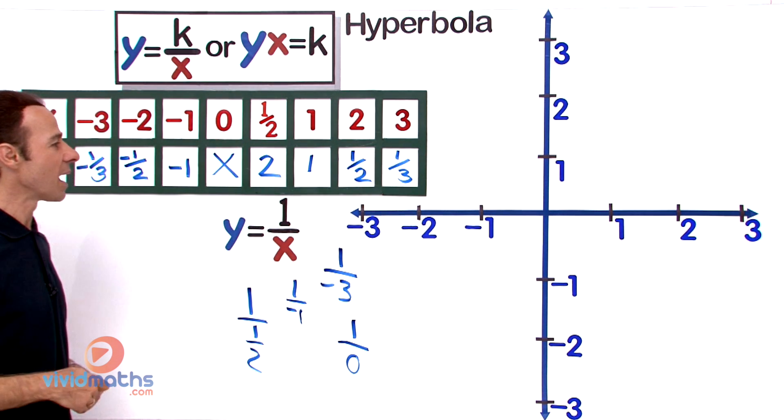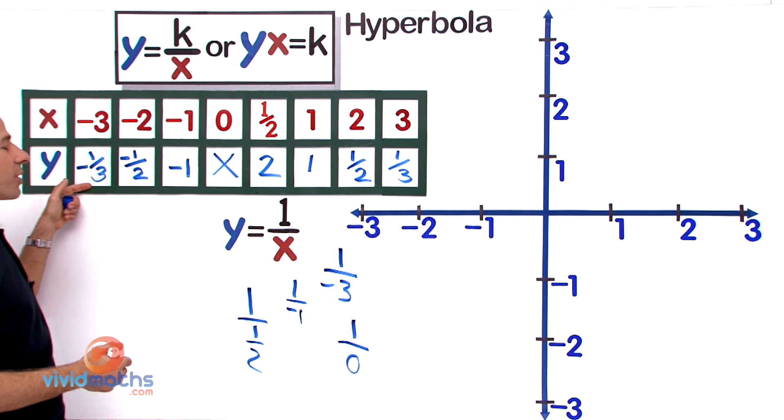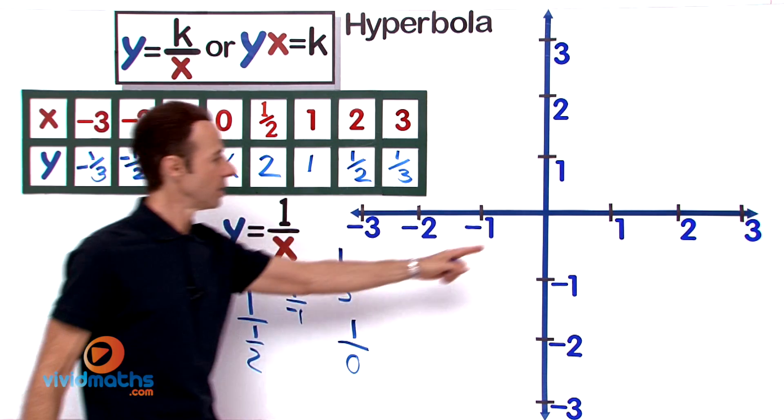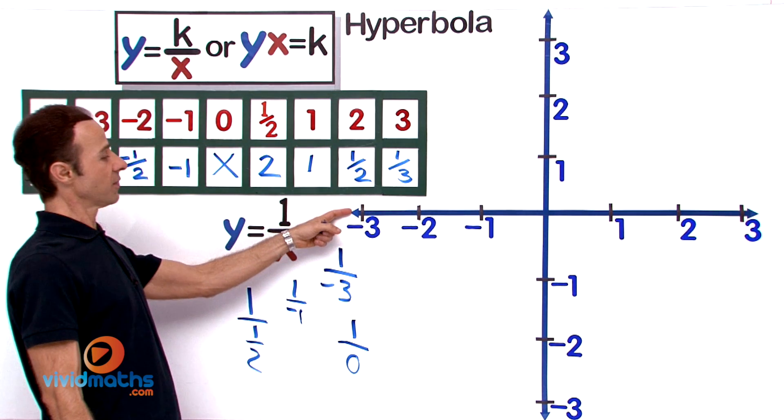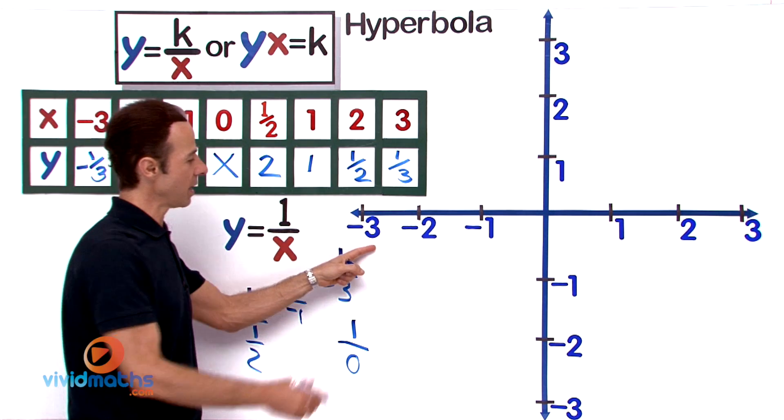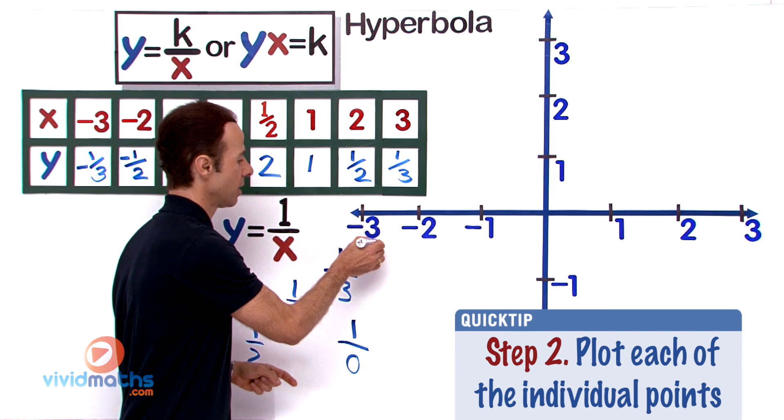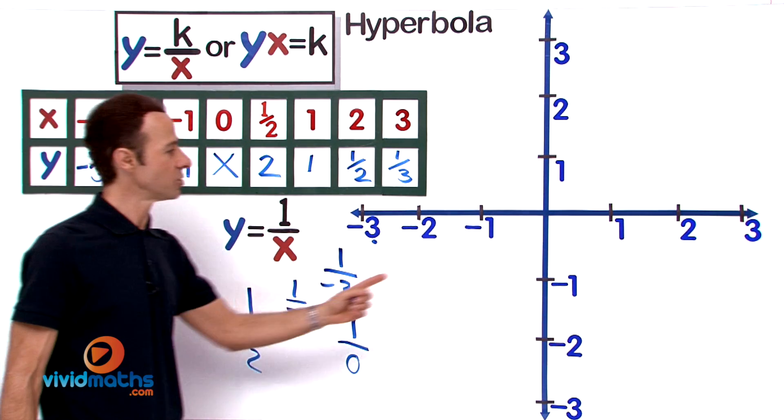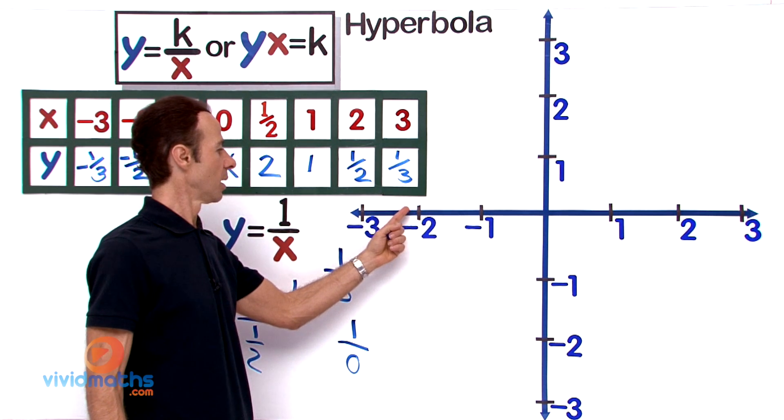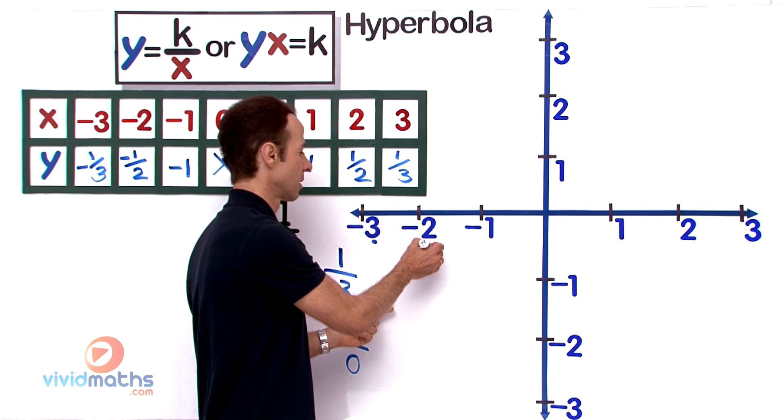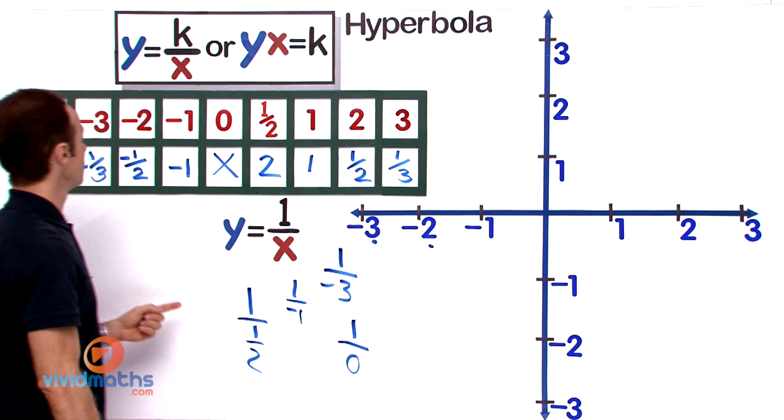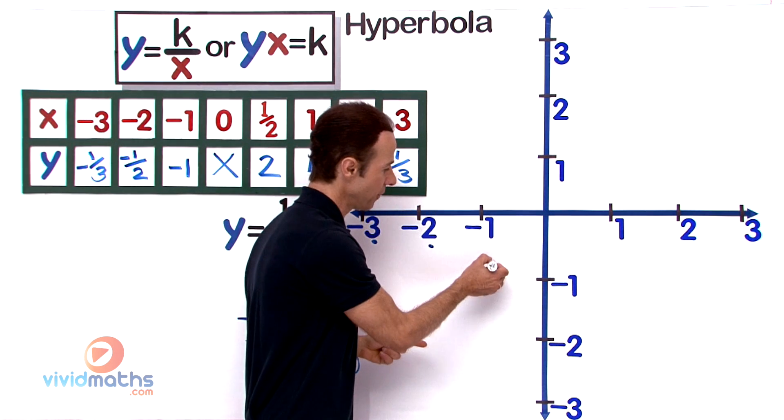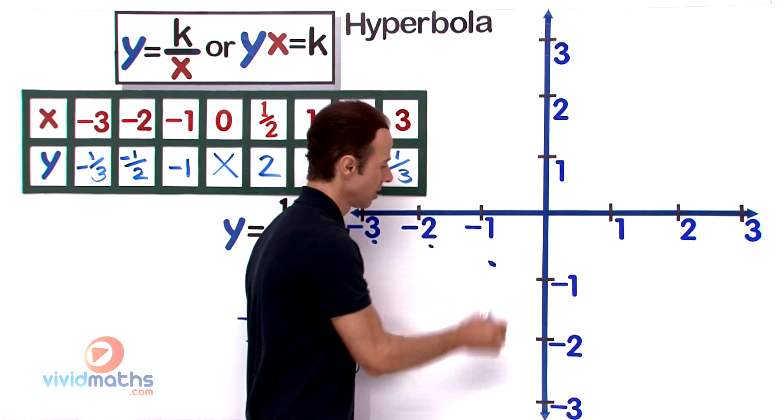OK, there's our points. What we've got to do is plot them up. Our first one is negative 3 with negative 1 third. Let's go to negative 3 on the x-axis. Negative 3 comes along here and that's going to give us a value of negative a third, which is about somewhere along there. There's our first point. The next point is negative 2, negative 1 half. Let's go to negative 2 and negative 1 half. Let's go to negative 1, negative 1: both negative 1, so there we are, perfect right there, cuts through there.